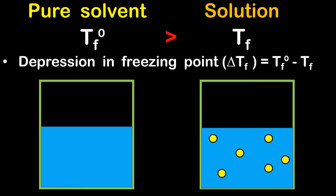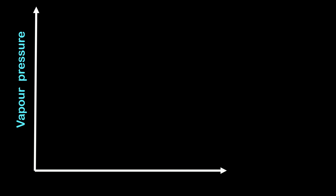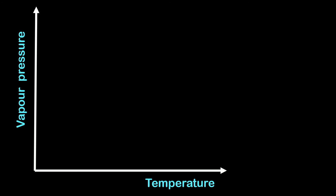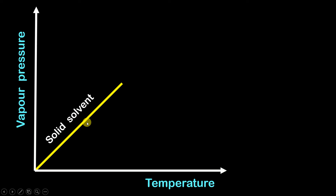Now let us understand why this happens with the help of a graph. We take vapor pressure on the y-axis and temperature on the x-axis. For those who don't know what vapor pressure is, there is a separate video linked in the description. Let us first plot a graph for solid solvent — that is the solvent in its solid phase — and we observe it is a straight line.